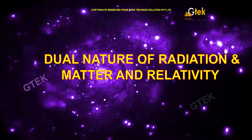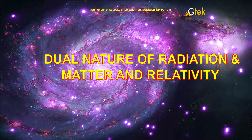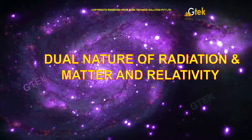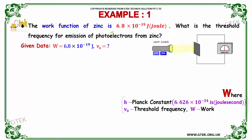Here is a problem on dual nature of radiation and matter and relativity. The work function of zinc is 6.8 × 10⁻¹⁹ Joule. What is the threshold frequency for emission of photoelectrons from zinc? That's the question.